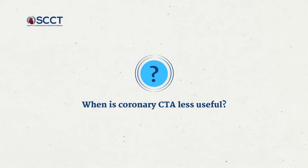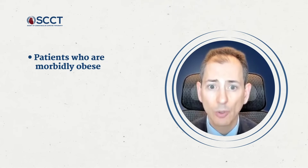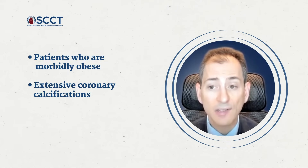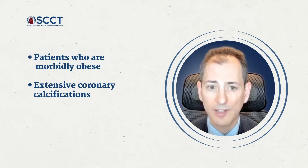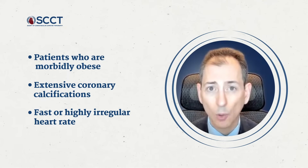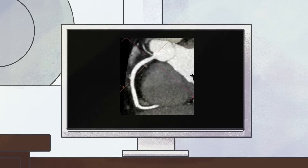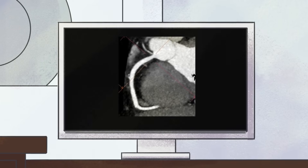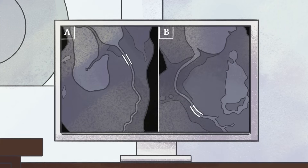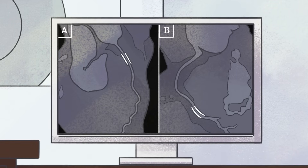When is coronary CTA less helpful? In patients who are morbidly obese and thus would be expected to have excessive image noise, when there are extensive coronary calcifications that can cause artifacts leading to the inability to accurately identify stenosis, and when there is a fast or highly irregular heart rate. This image is an example of a patient with extensive coronary calcifications — a coronary CTA in such an individual would be very challenging, if not impossible, to interpret. Also, if patients have stents, particularly small stents under 3 mm or overlapping stents, that would also be difficult to evaluate.